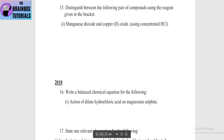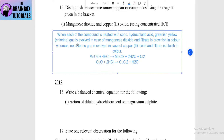Next: distinguish between manganese dioxide and copper oxide using concentrated HCl as the reagent. When MnO2 reacts with concentrated HCl, a greenish-yellow chlorine gas is evolved, and the filtrate turns brownish in color (manganese chloride). When CuO reacts with concentrated HCl, no chlorine gas is evolved, and the filtrate turns bluish in color (copper chloride). You can also provide the reactions for a better answer.